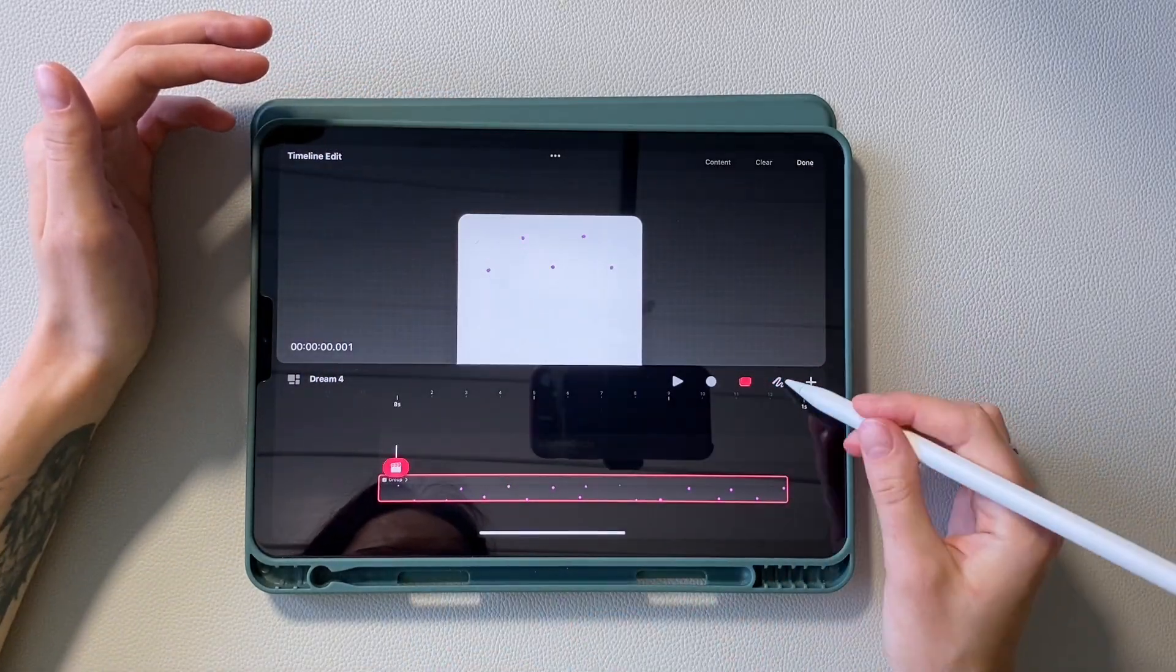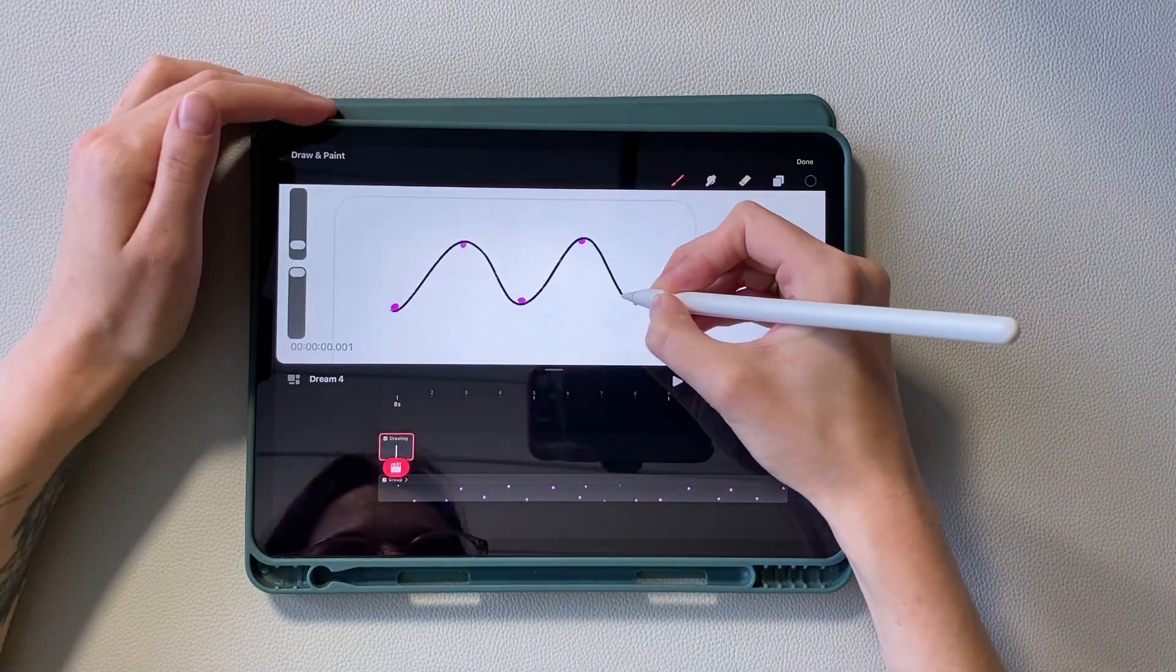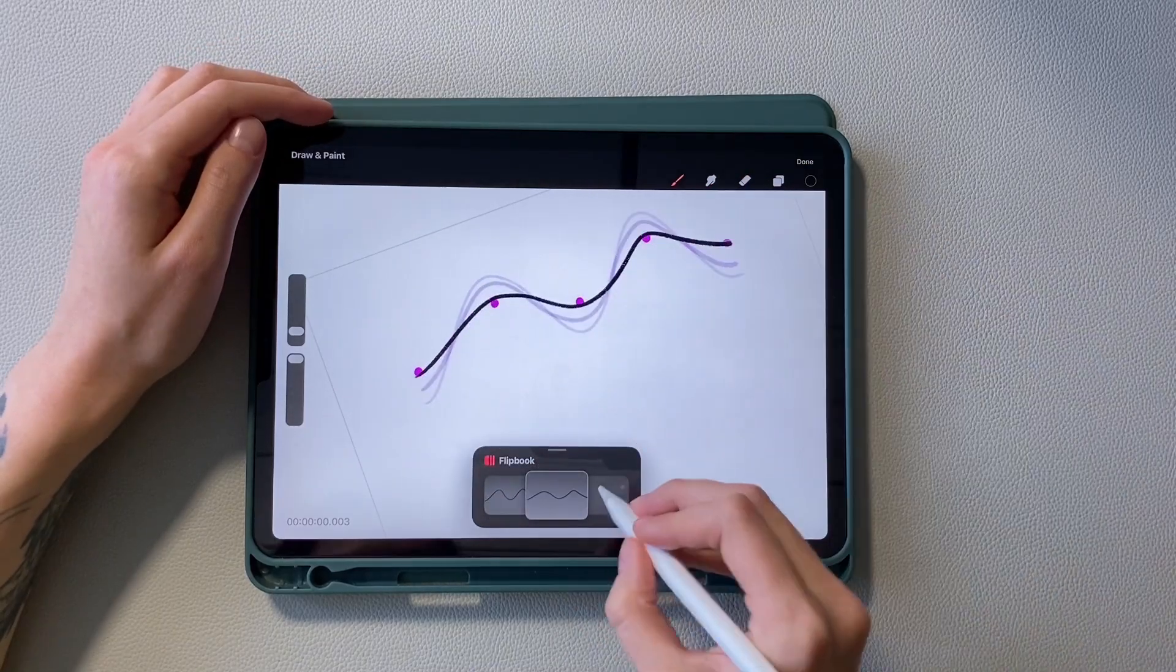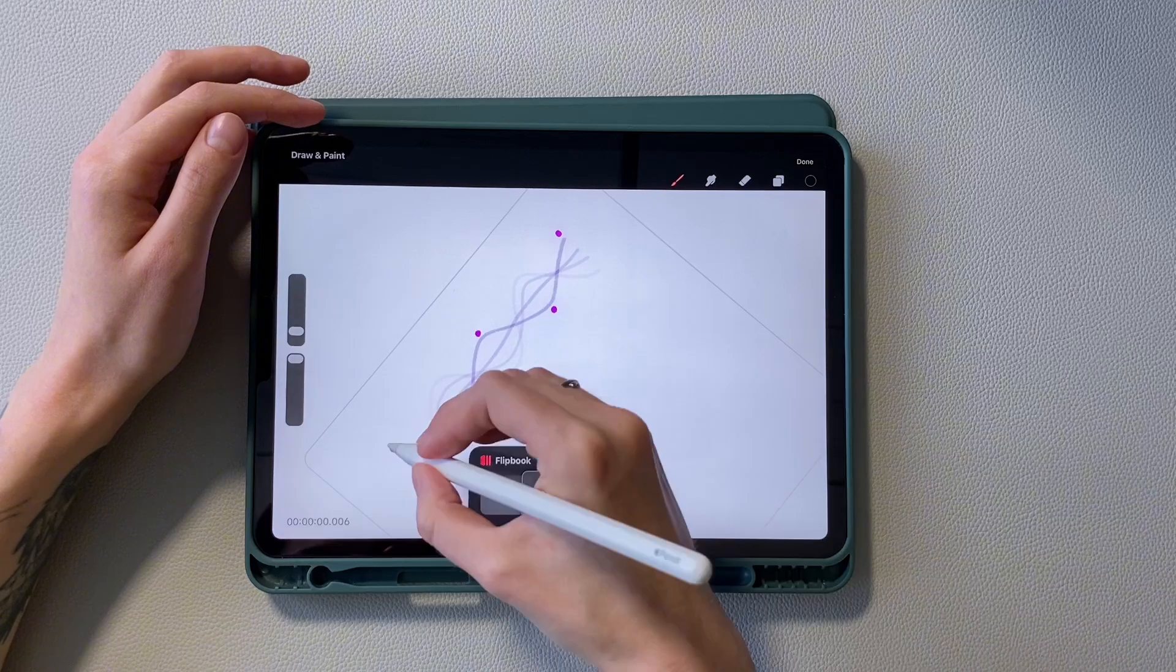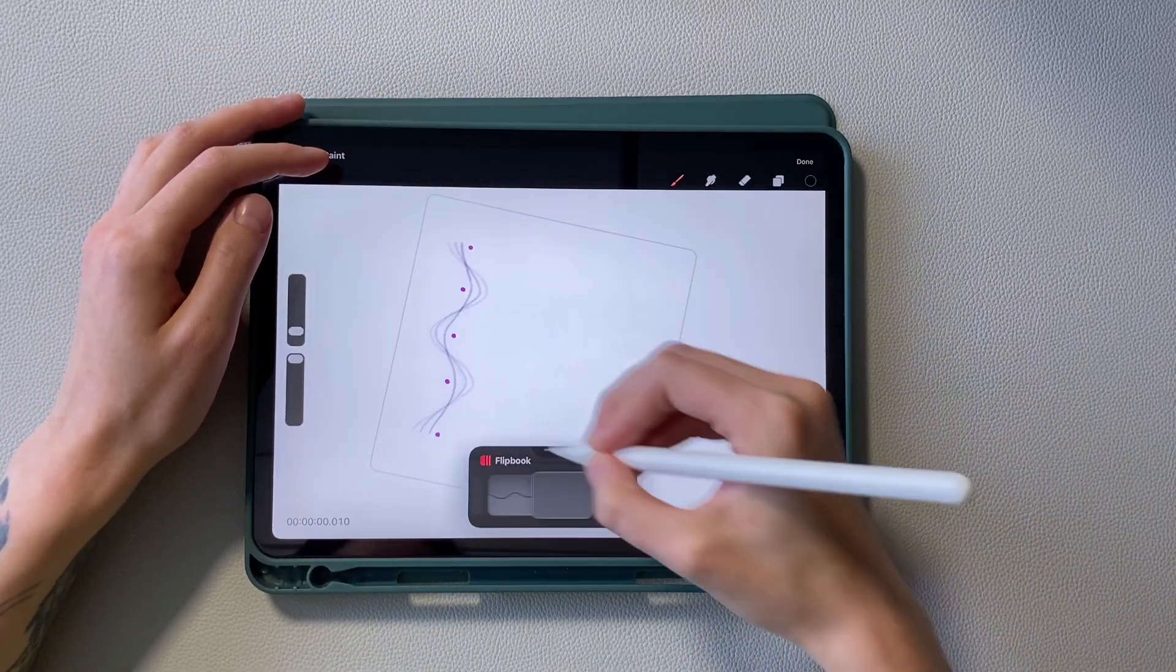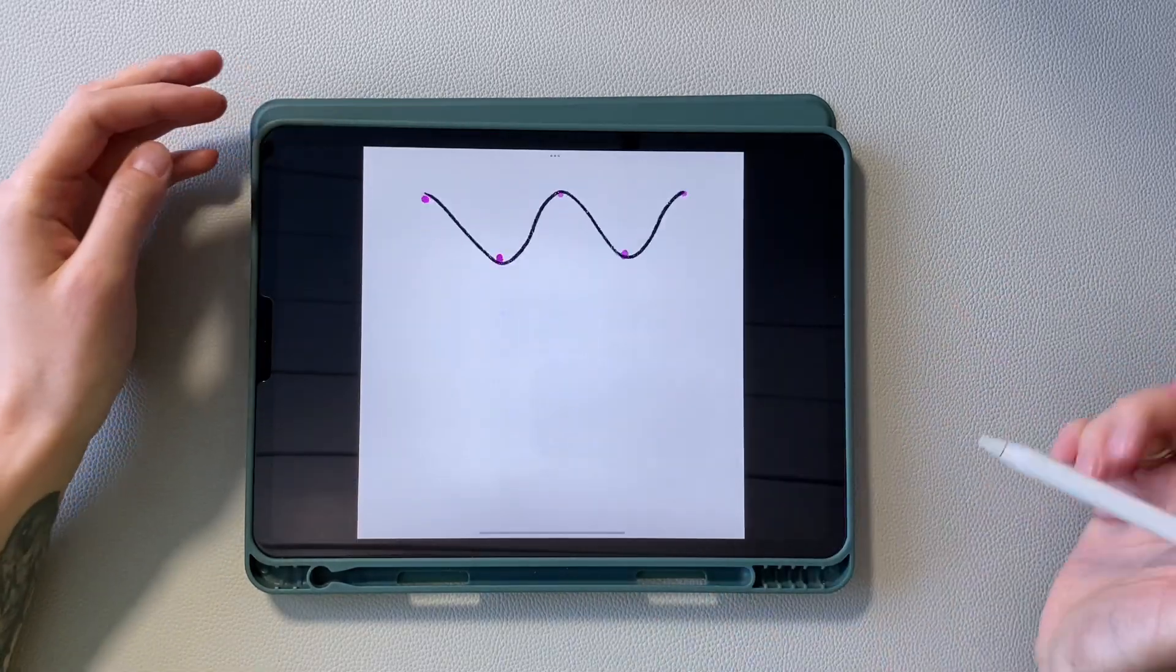Now create a new track. And start drawing a wave on each frame that encircles these points. Check the preview.